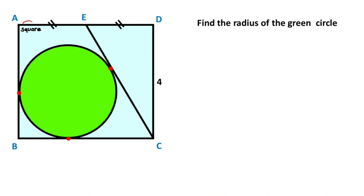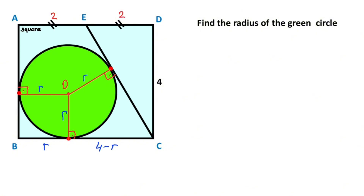Notice that if the side is four units, these two parts must each equal two units. Let's call point O the center of the circle and draw a perpendicular line. These are the radii of the circle, so I'll represent them with lowercase r. Therefore, this length must equal four minus r.